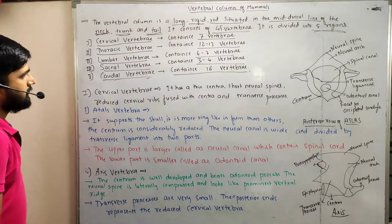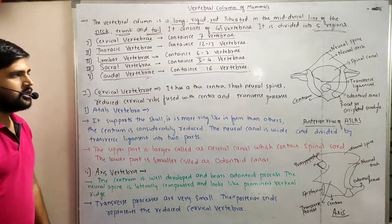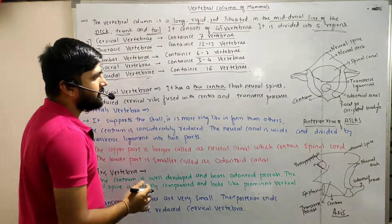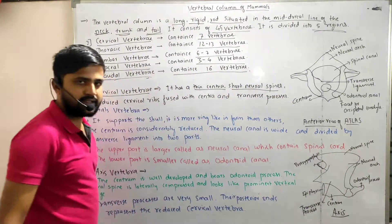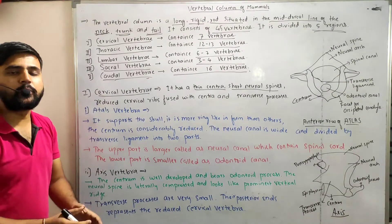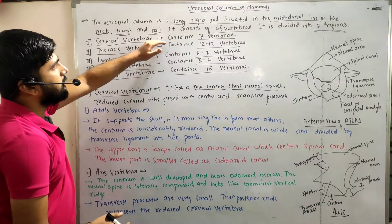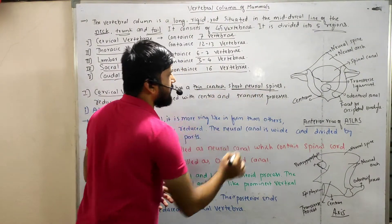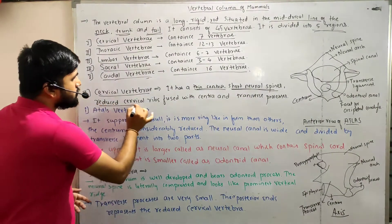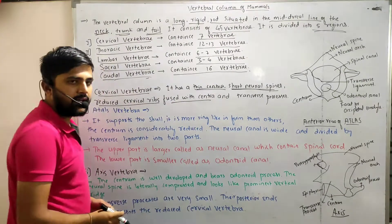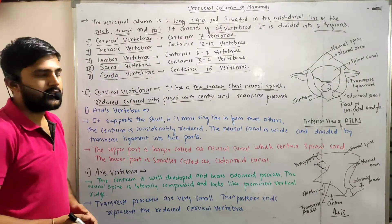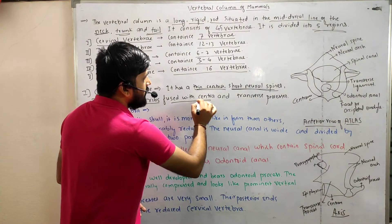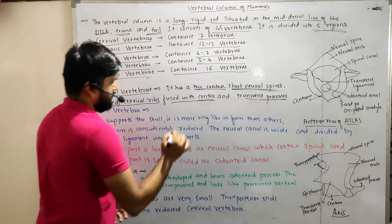In case of cervical vertebrae, they have a thin centra and short neural spines. The reduced cervical ribs are fused with the centra and transverse processes.